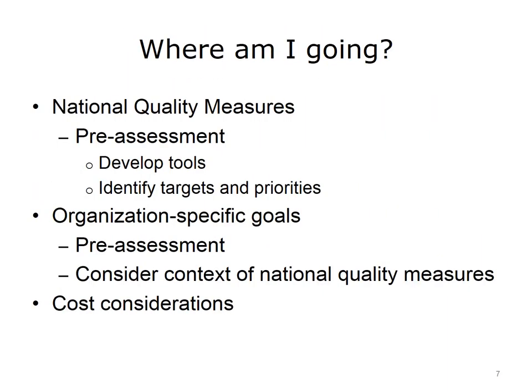There are national quality measures that will be linked to reimbursement. Review of these measures should be considered a first step. A preliminary assessment of the organization's current performance on these measures serves two functions: first, to determine the current status, the measurement approaches and tools need to be identified, developed, and deployed — this will form the baseline data to compare against future data when improvement interventions have been tried. Second, the data will help determine which areas need to be targeted for improvement and what areas should be prioritized.